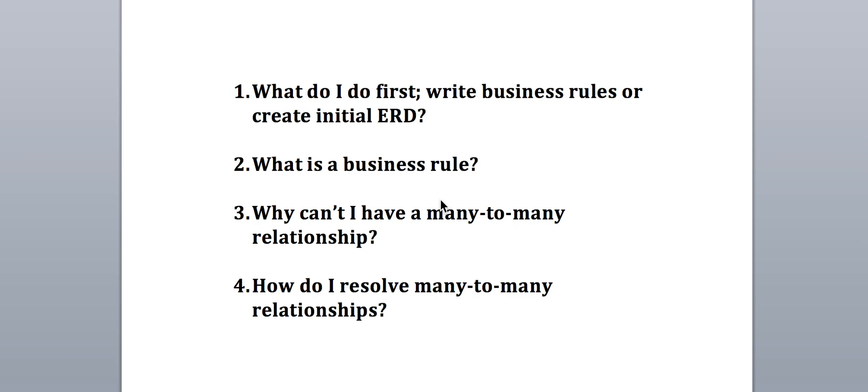Those nouns — customer, order, products — are going to turn into your entities in your diagram. Once you have an idea of what the entities are, you create an initial ER diagram. For example, customer data needs to be related to that customer's order data, so there will be a line in your ER diagram between customer and order representing a relationship. Then you look at that ERD and ask: what are the business rules that define the relationship between customer data and order data?